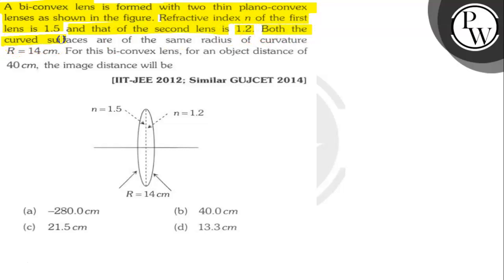Both the curved surfaces are of the same radius of curvature equal to 14 cm. For this biconvex lens, for an object distance of 40 cm, the image distance would be... Let's find out.